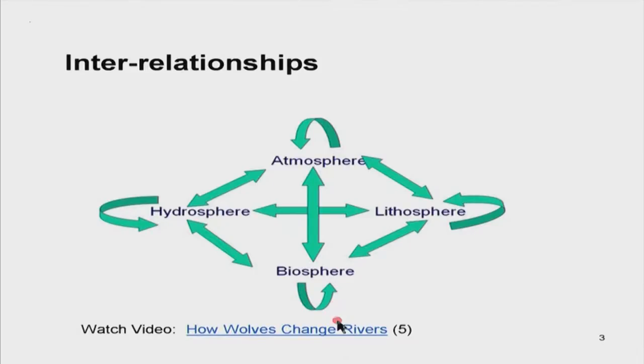In order to emphasize this point, I would like to show you a short five-minute video where you see how the reintroduction of one species — the wolf — in Yellowstone National Park led to profound changes not only in the biological community but in fact even in the way the rivers ran. The rivers basically altered their courses; the whole topography had a great impact from just the reintroduction of this single species. The wolf was there in Yellowstone before but got hunted down and then was reintroduced, and that reintroduction had a cascade of beneficial effects.